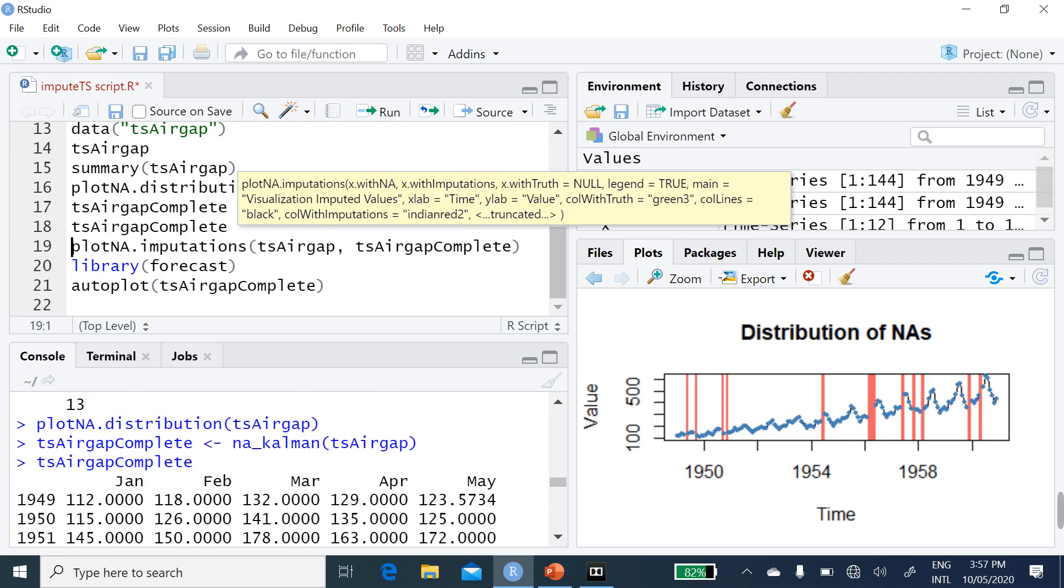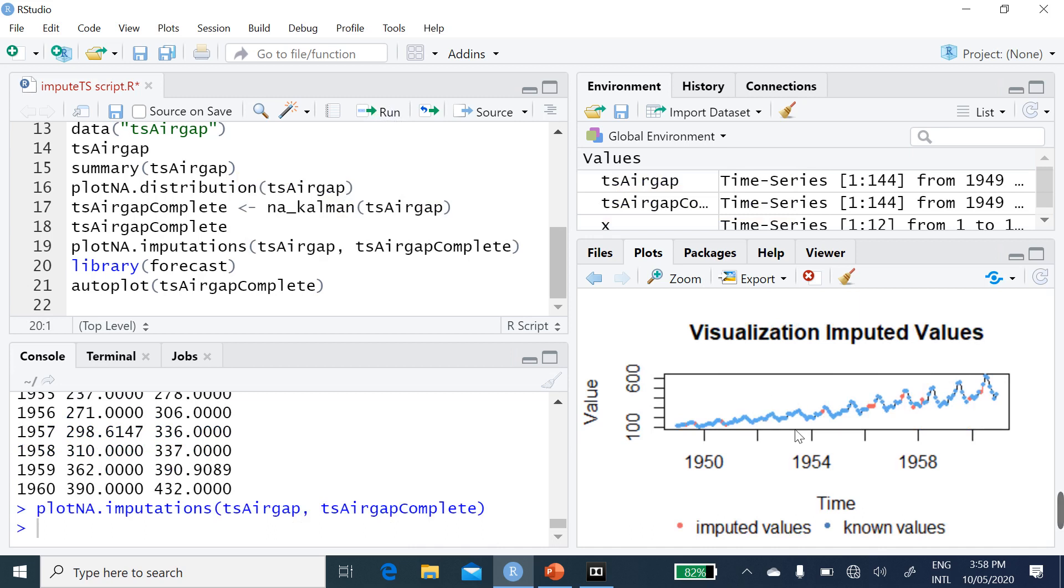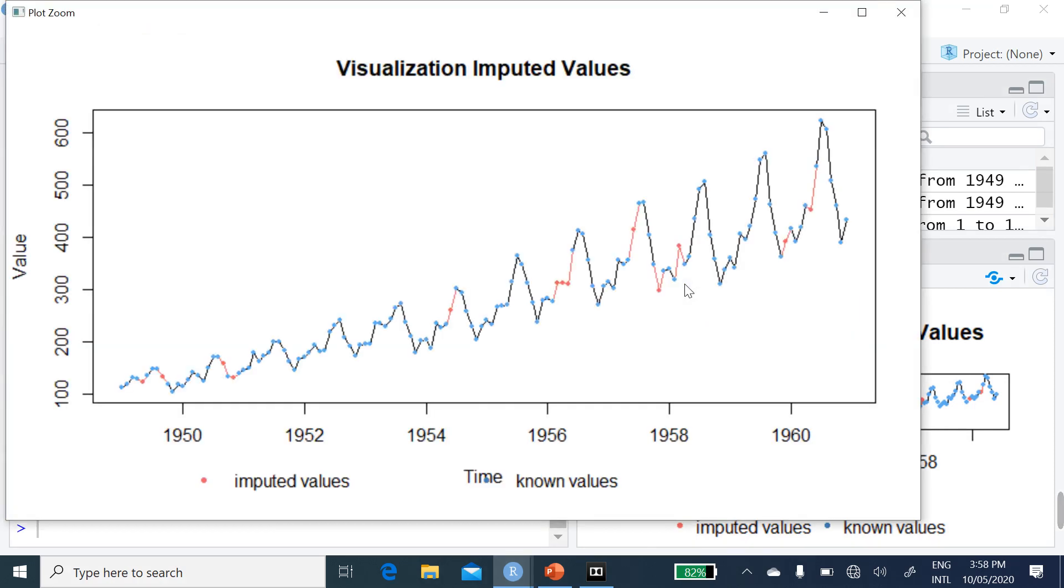And in case we want to plot and see those points where you have the missing values replaced, then let's run this. That's plotNA.imputation. You can see now. It's quite different from the situation where the vertical lines are used to indicate the point where you have missing values. Now let's zoom this so that we see clearly the picture. Now you have your complete data.